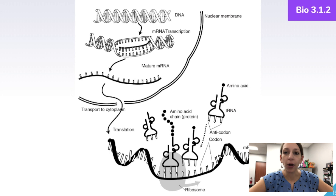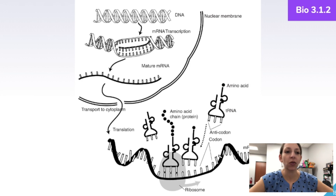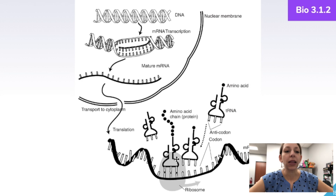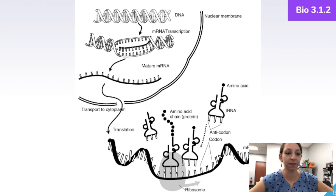This diagram depicts the entire process of protein synthesis. We start with DNA inside the nucleus. That DNA is transcribed — a new mRNA template is built off the DNA. The mRNA leaves the nucleus and is translated at the ribosome by tRNA molecules, which bring over amino acids. Those amino acids are linked up to form a protein.